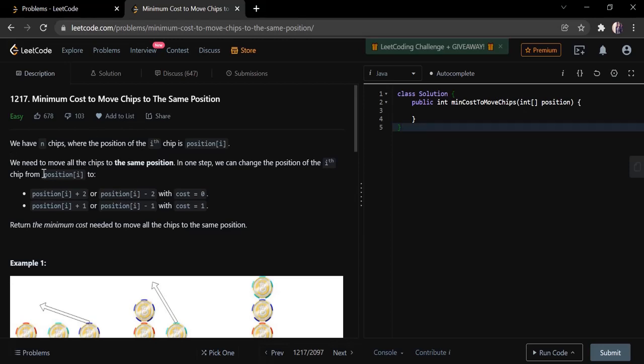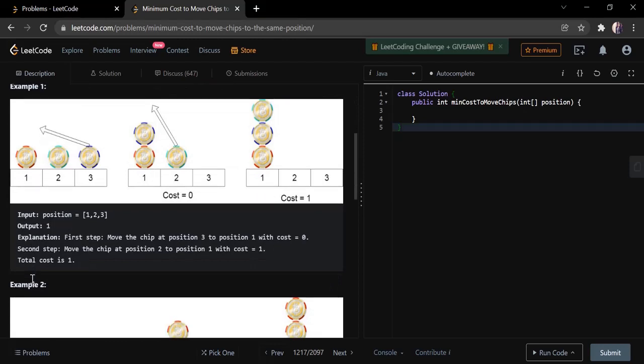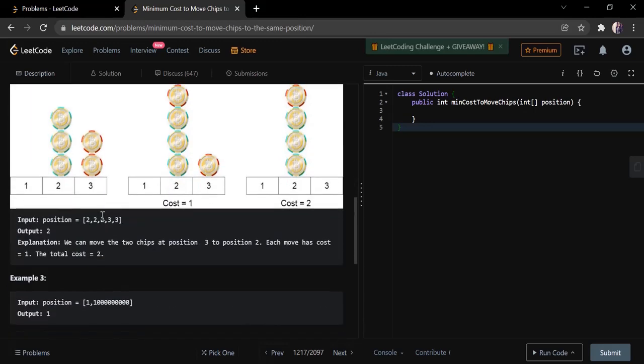So this is an easy category problem. The input given here is an integer array which represents at what positions the coins are present. For example, consider example 2. There are three 2s which means there are three coins at position 2, and there are two 3s which means there are two coins at position 3.